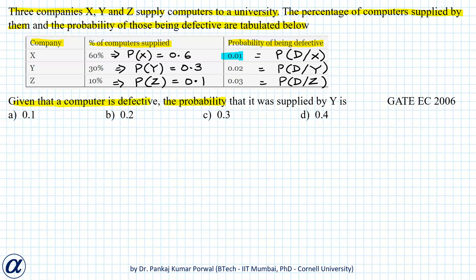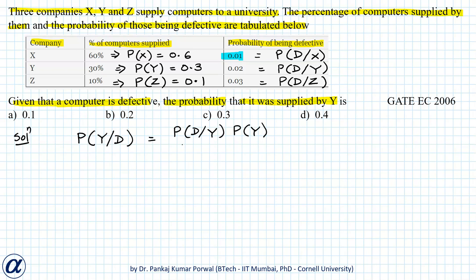Now we want to find the probability that, given a computer is defective, it was supplied by Y. Mathematically, that is P(Y | defective). Using Bayes' theorem, I can write it as: probability of being defective given supplied by Y, multiplied by probability that the computer was supplied by Y, divided by probability that the computer is defective.